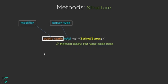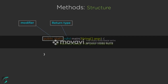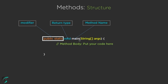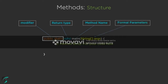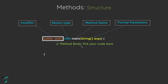Next comes void, which is actually the return type in Java. This simply signifies that the main method does not return anything — void means nothing. This main is actually the name of the method, and String array args is actually the formal parameters of this main method. Whatever code we write inside the main method is known as the method body.